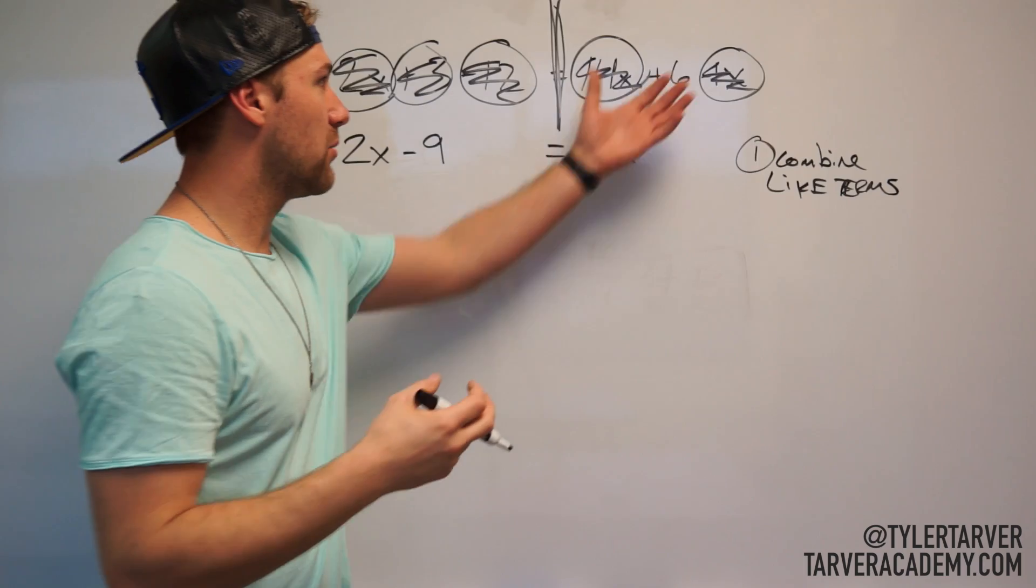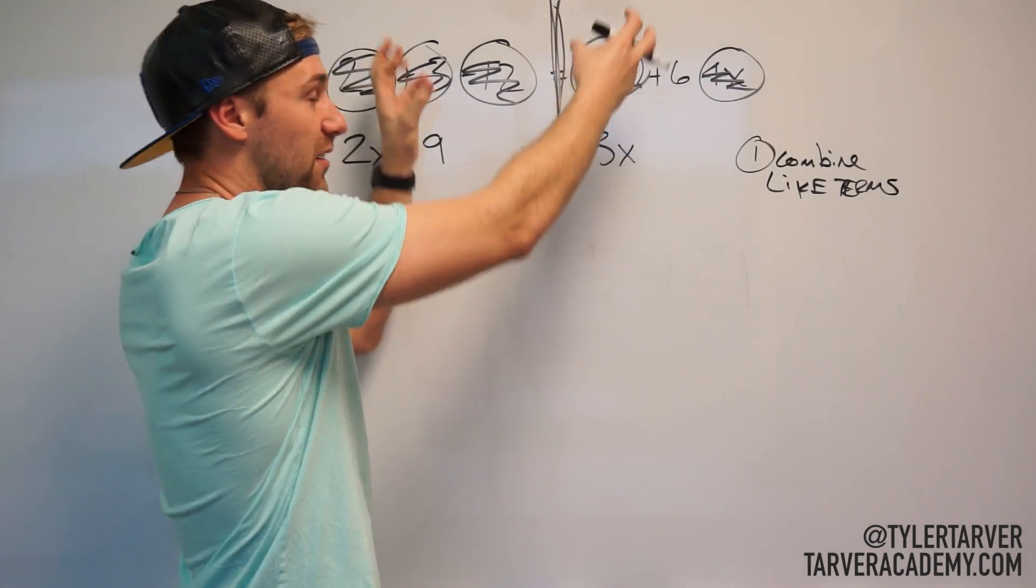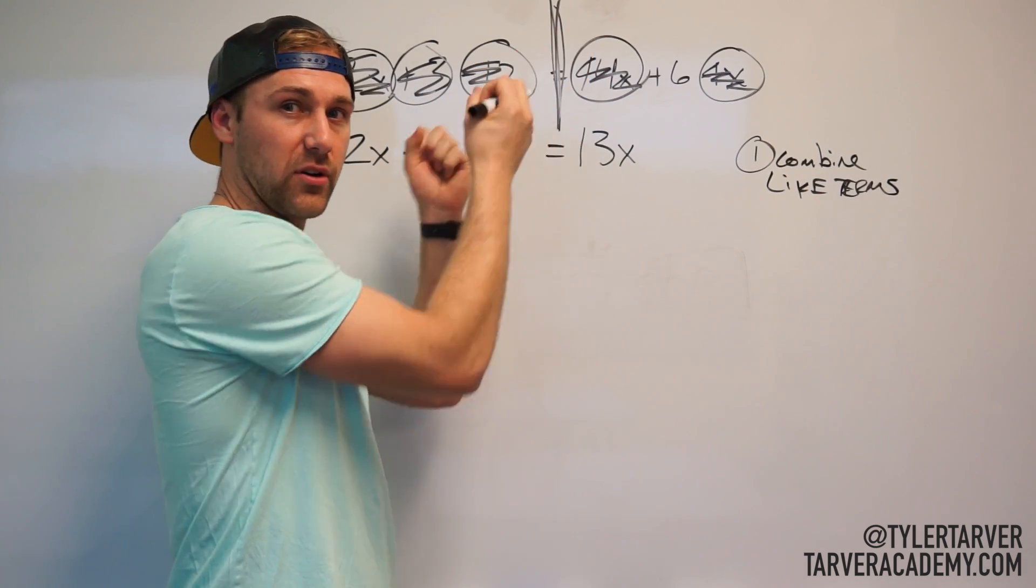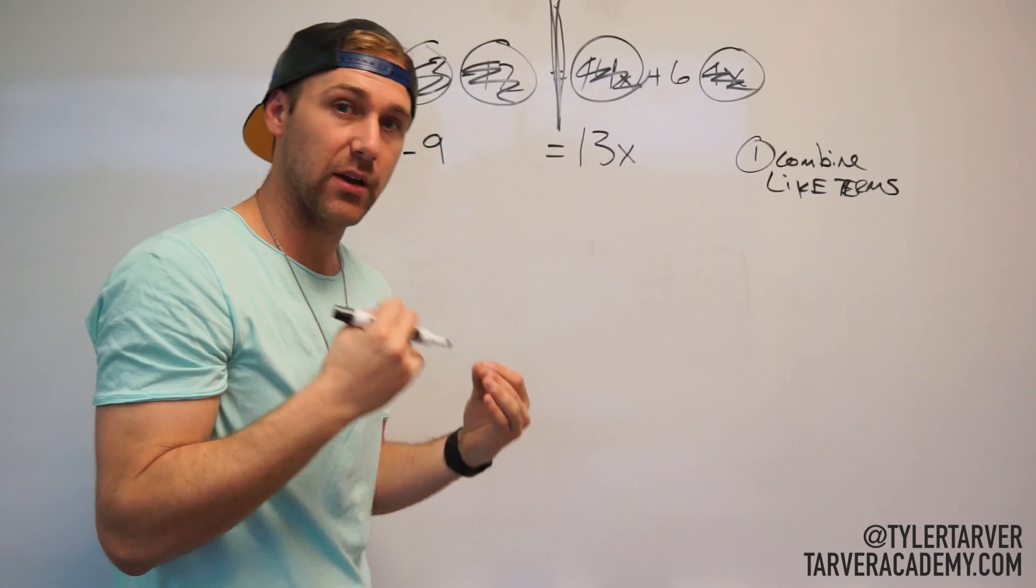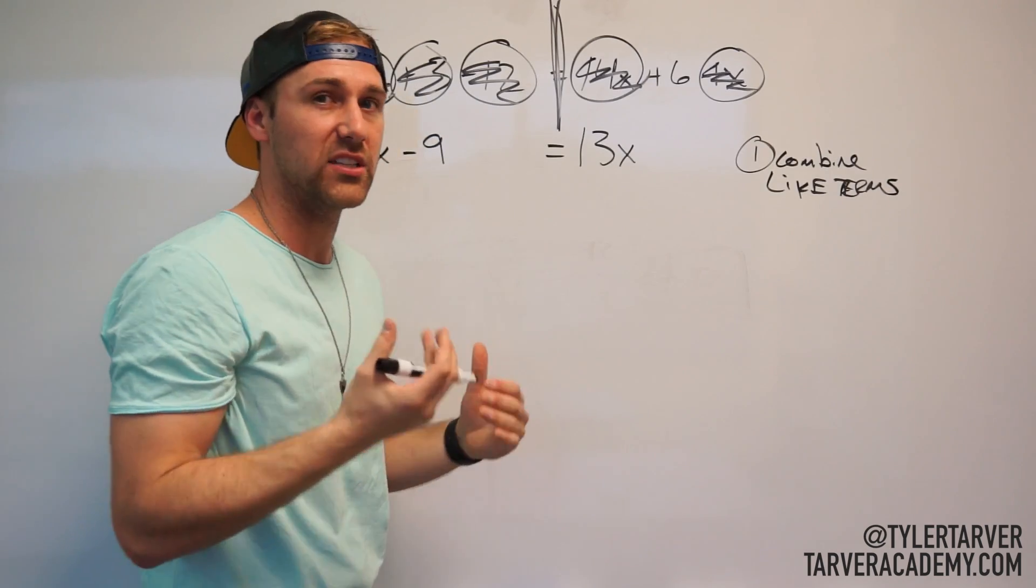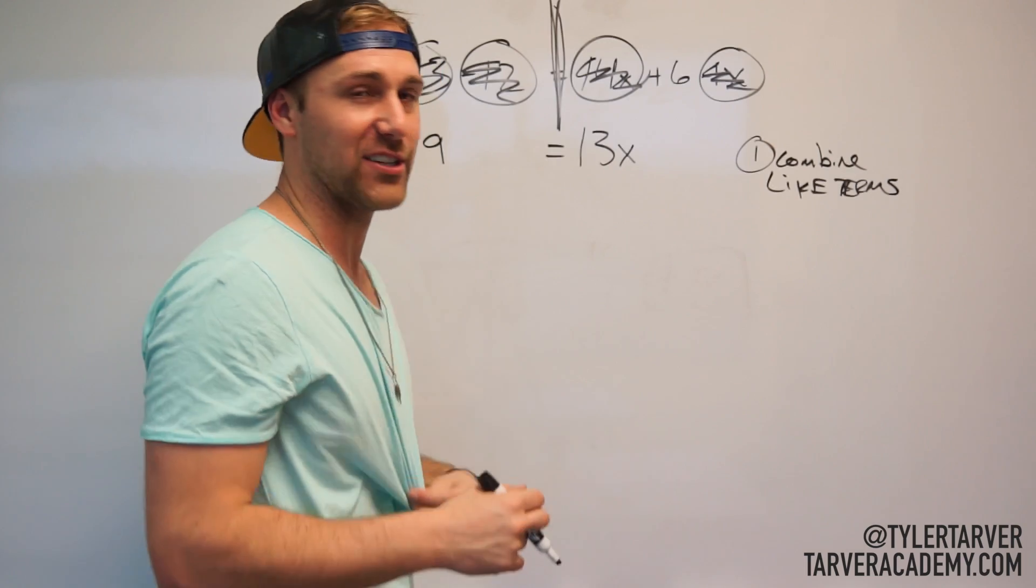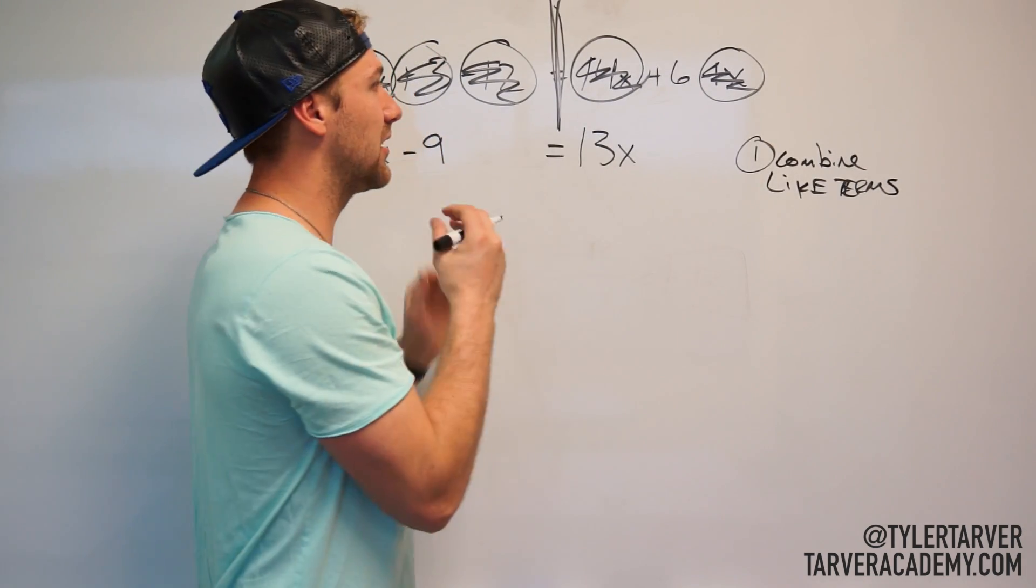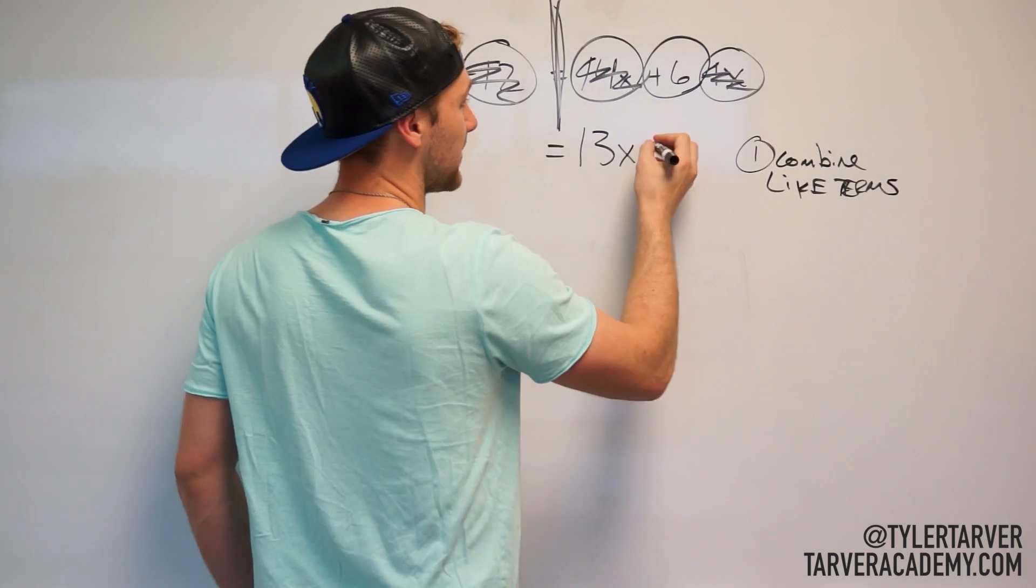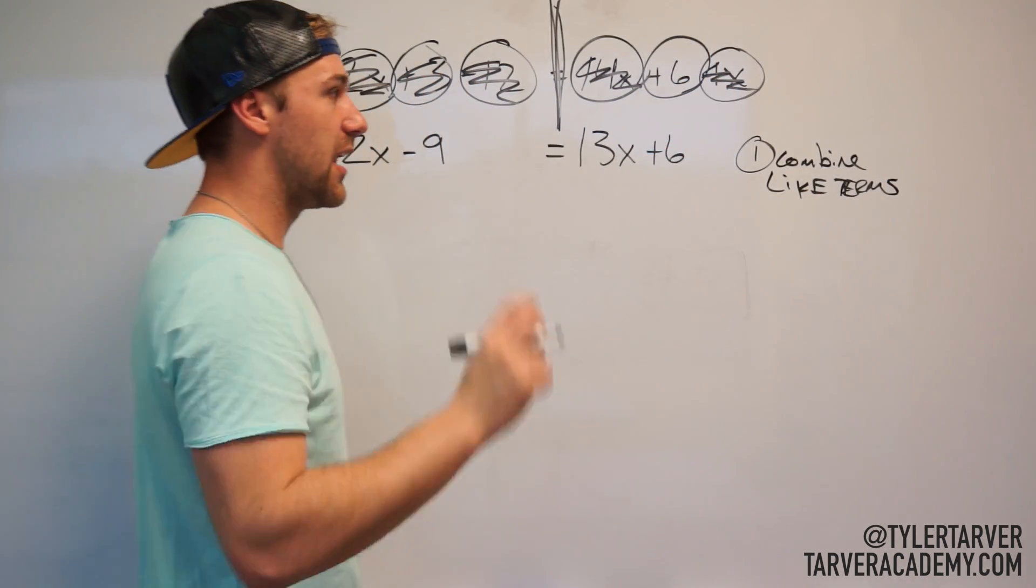Another thing that students do a lot is they don't bring down their x's—they get lazy or they get in a hurry and they just forget to bring down everything. Everything has to have a reason for going away. I have to be combining or dividing, I have to be doing something to get rid of stuff. You can't just get rid of it because you don't want to write it anymore. That makes your math equation wrong. And there's nothing left to combine with that, so it's plus six. Okay, I combined my like terms, next step.